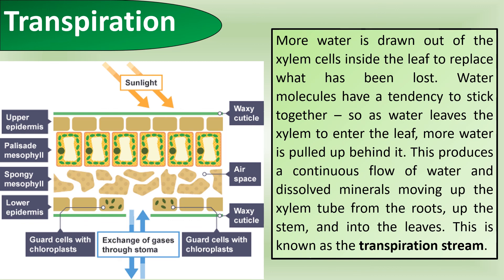Remember, water is leaving the plant at the leaves, so more water is drawn up out of the xylem cells in the leaf to replace what has been lost. Water molecules have a tendency to stick together by cohesion forces. As water leaves the xylem to enter the leaf, more water is pulled up behind it. This produces a continuous flow of water and dissolved materials moving through the xylem tubes of the root up into the stem and into the leaves. This is known as the transpiration stream.